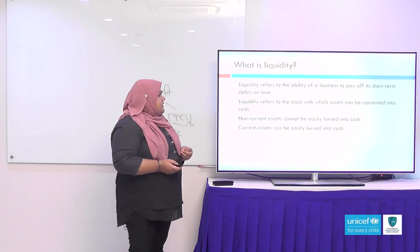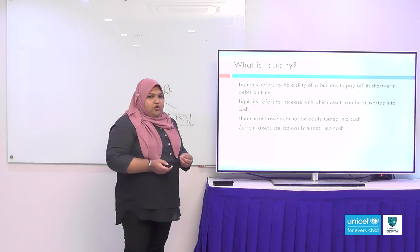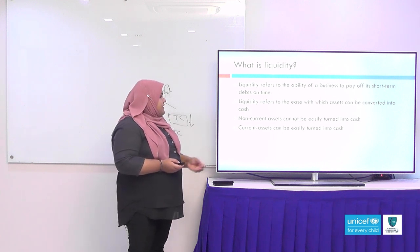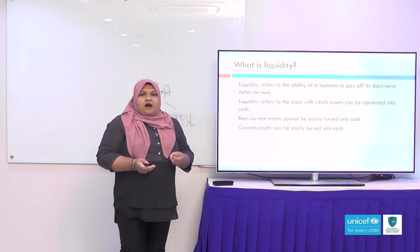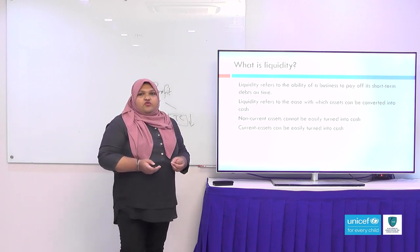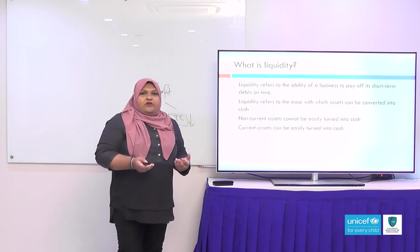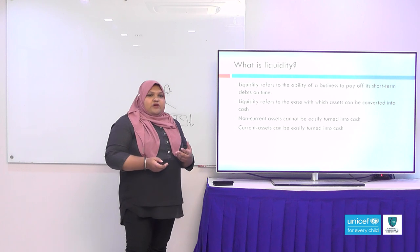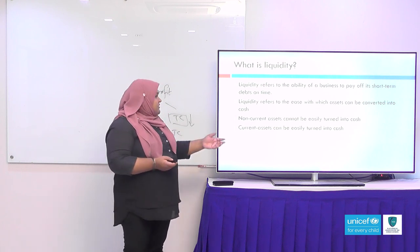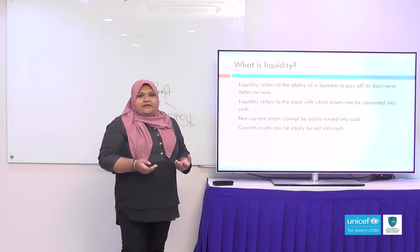Liquidity also refers to the ease with which assets can be converted into cash. A company has two types of assets: non-current assets and current assets. Non-current assets cannot be easily turned into cash — for example, a building can only be converted to cash if you sell it. But current assets, such as finished goods or stock, can be easily turned into cash the moment you sell them.